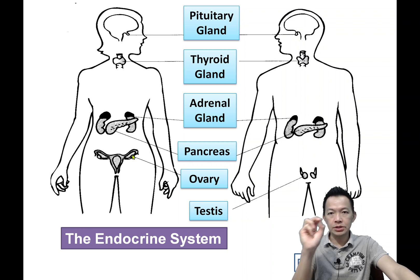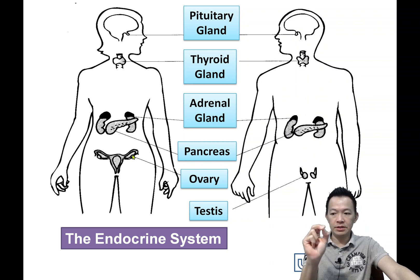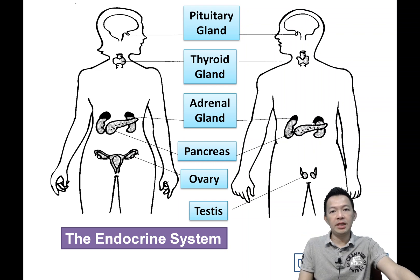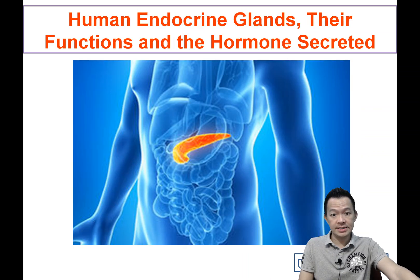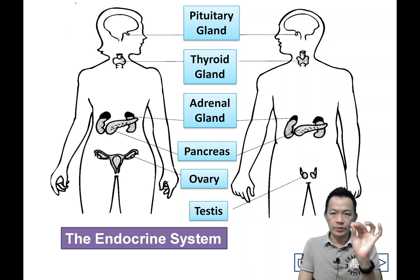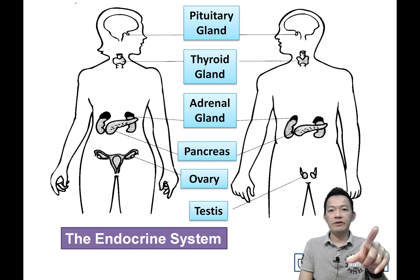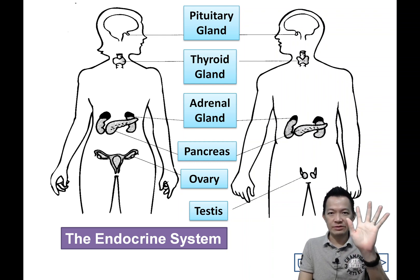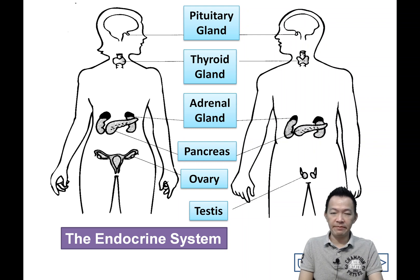The hormones control our body slowly — that's what the hormones do to help our body. Any examples of the hormones, their functions, and their effects on our body? We'll talk about that in another new video. See you in the next video. Bye-bye!